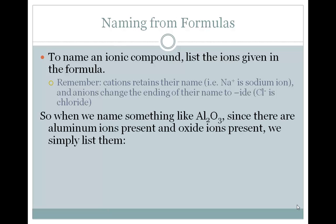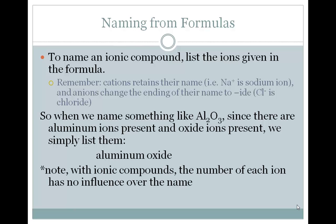So when we have to name something like Al2O3, we see that there are aluminum ions present and oxide ions present, so we simply list them. We just call it aluminum oxide. It is important to note that with ionic compounds, the number of each ion has no influence over the name. So we don't call it dialuminum trioxide. Because this is ionic, it can only combine in this one ratio. So by saying aluminum oxide, we know that there are 2 aluminums and 3 oxygens.